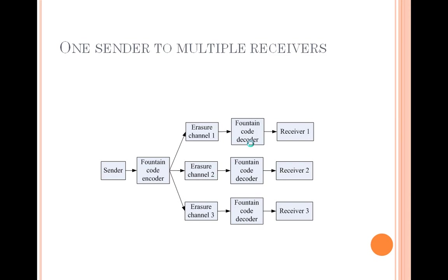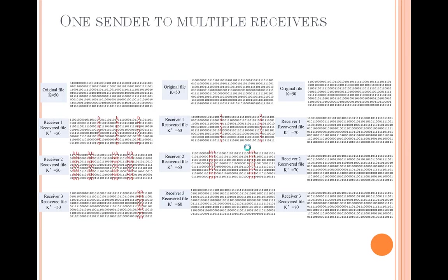Also, the system performance is further tested for the multicast scenario, where multiple receivers are receiving the encoded packets of the same file from a single control center. The multicast scenario is shown in the figure, where three receivers are assumed. Since the erasure channels of different receivers are different, the encoded packets received by each receiver are also different from those received by the other two receivers. Therefore, even if the three receivers have received the same number of encoded packets, the decoding performance is different.